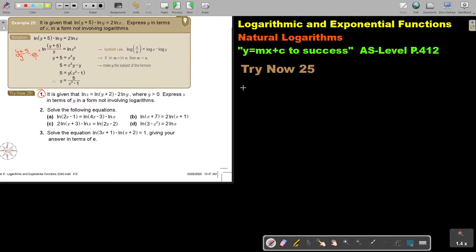So let's start. Number 1, it is given that ln z equals ln(y+2) minus 2 ln y, where y is bigger than 0. Express z in terms of y in a form not involving logarithms.